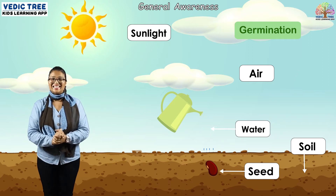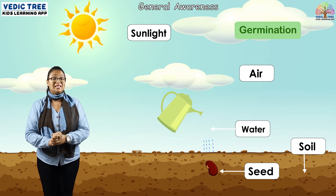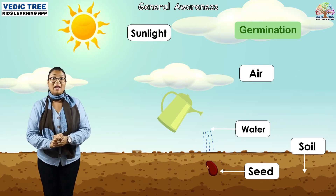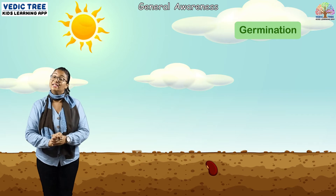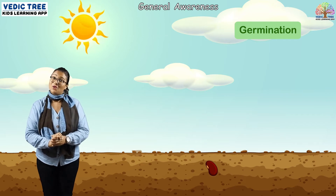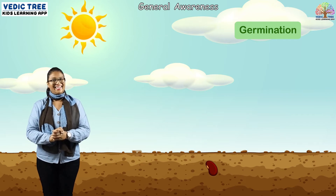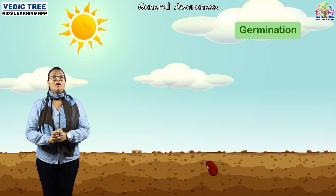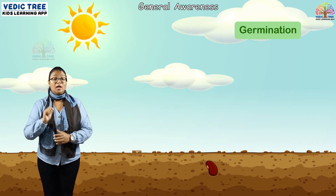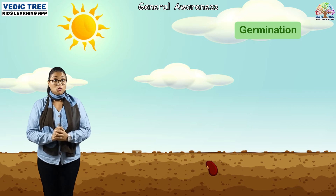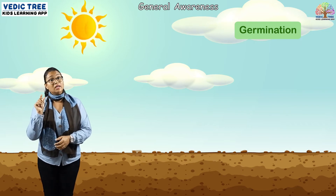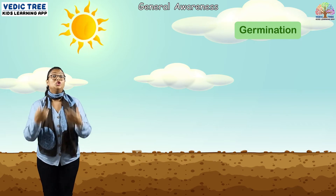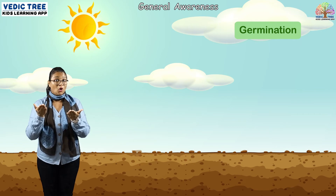Now let's see how plants grow step by step. First, we need to take a seed of the plant we want to grow.